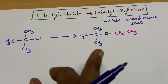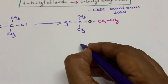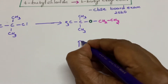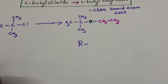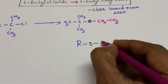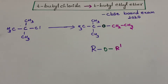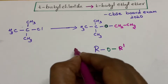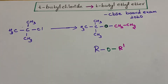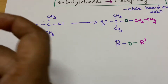So immediately when you listen to the word ether, which reaction comes to your mind? Williamson ether synthesis, isn't it? For any ether of this kind — it is an asymmetric ether, an unsymmetrical ether — to prepare an unsymmetric ether, there are two possibilities, two ways you can prepare this.